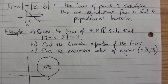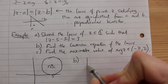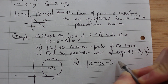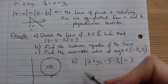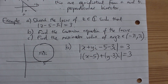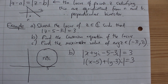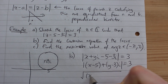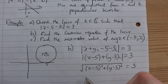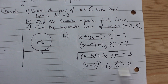To find the Cartesian equation, replace z with x plus iy. We get the modulus of x plus iy minus 5 minus 3i equals 3, which is the modulus of (x minus 5) plus (y minus 3)i equals 3. Since the modulus of a plus bi is the square root of a² plus b², this gives the square root of (x minus 5)² plus (y minus 3)² equals 3, so (x minus 5)² plus (y minus 3)² equals 9.